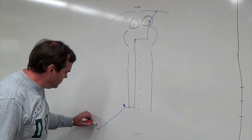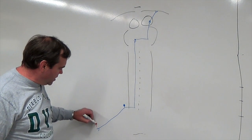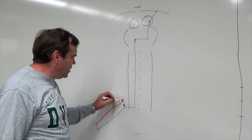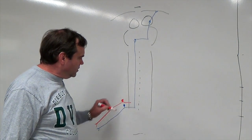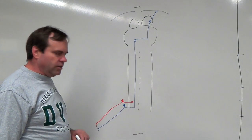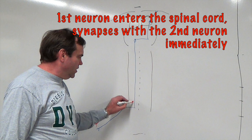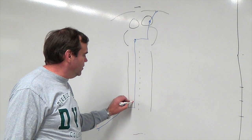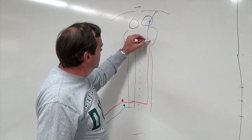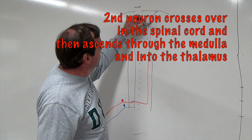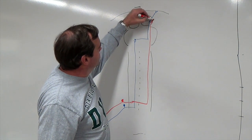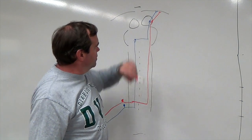Once again, we have our receptor down in the big toe. The axon of the pseudo-unipolar neuron comes up to the posterior root ganglion where the cell body is, then it enters the spinal cord. It synapses on the second neuron immediately. This second neuron crosses over and ascends the spinal cord to the medulla, where it synapses on the third neuron, and that projects to the cerebral cortex.